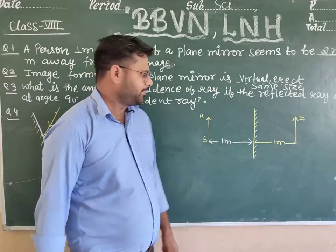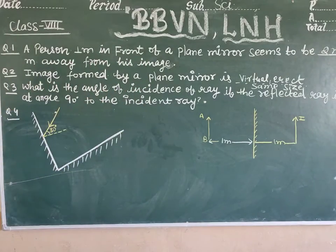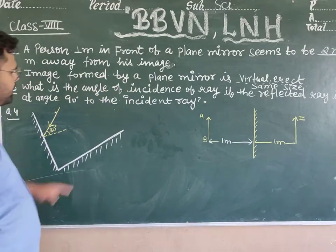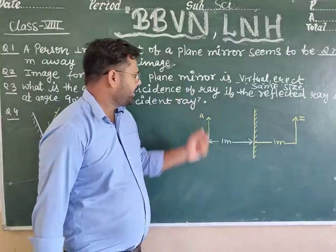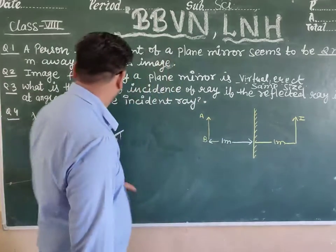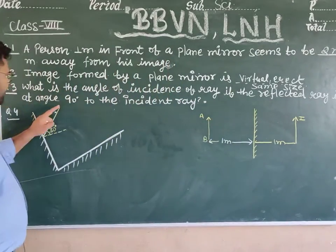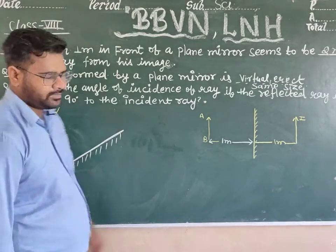Next question: what is the angle of incidence of a ray if the reflected ray is at an angle of 90 degrees to the incident ray?